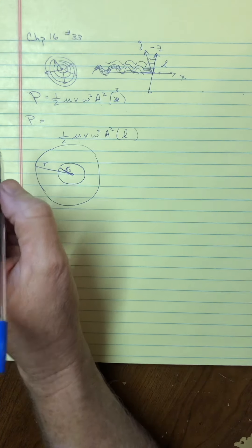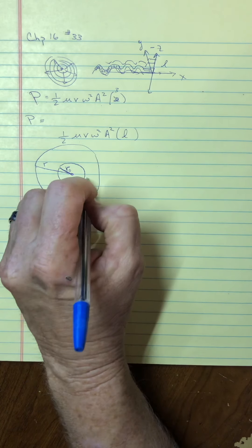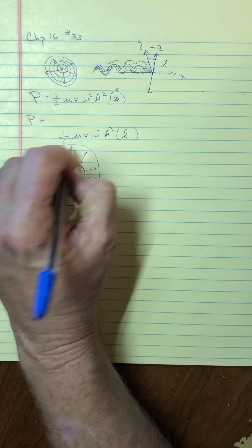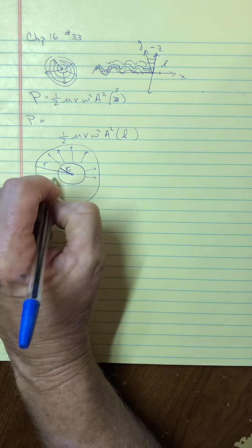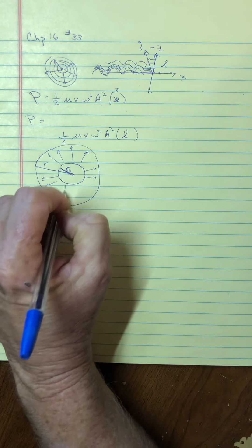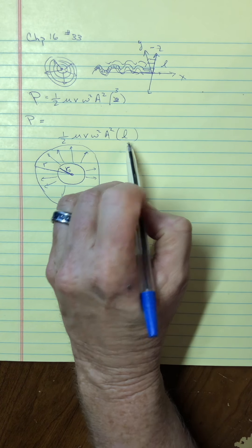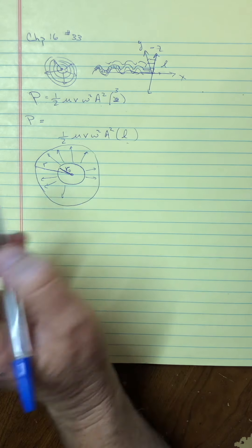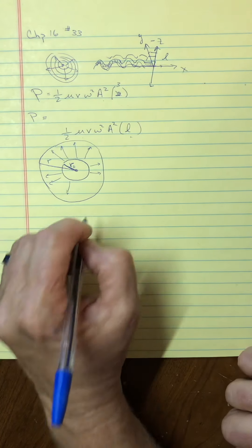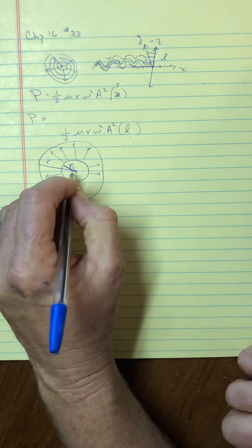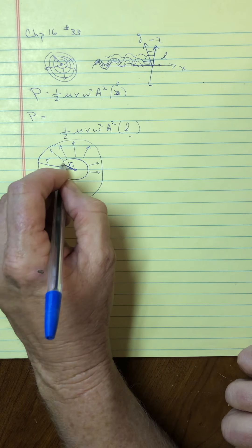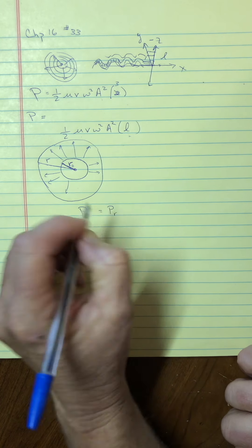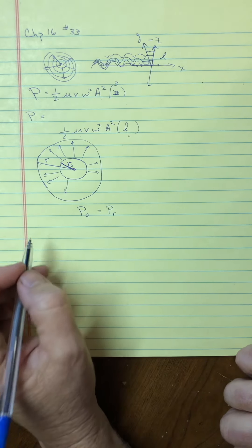Here's the key to the understanding here: if this wave moves out and now is spread out over a bigger length, meaning that number is bigger, then what ends up happening is something else has to get smaller for the power to be the same. Or, put this way, the power at this position, say R0, and the power at position R would have to be the same.